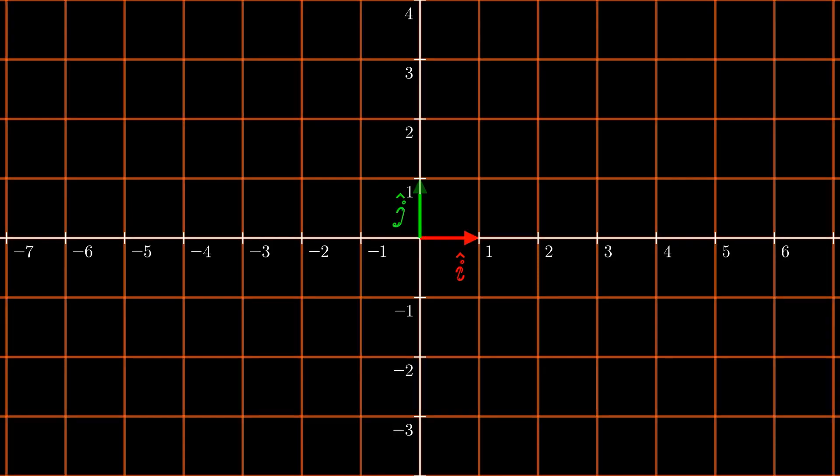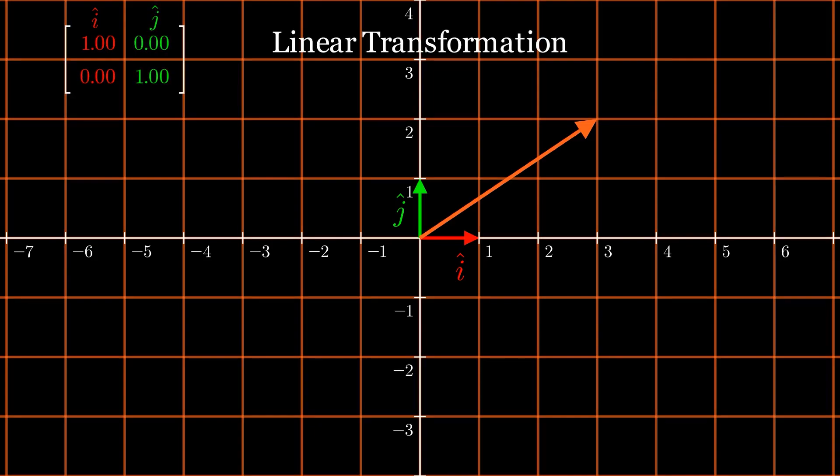Let's consider a Euclidean plane with the standard basis vectors i-hat and j-hat and another vector say 2,3. To transform the vector, we perform matrix vector multiplication. But the columns of the matrix that define the desired transformation are the coordinates of the basis vectors after the same transformation.